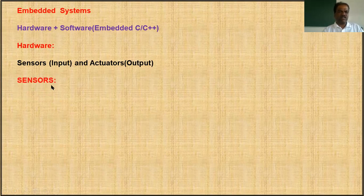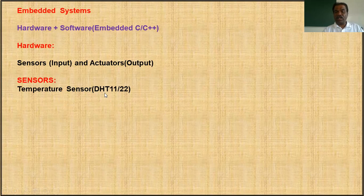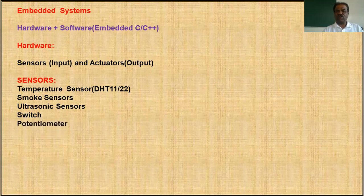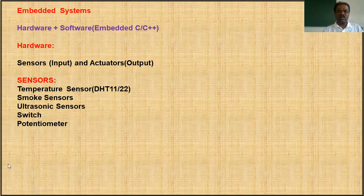We have different types of sensors: temperature sensors, humidity sensors — DHT11 or DHT22 (digital humidity temperature sensor), smoke sensors to detect smoke, ultrasonic sensors to measure distance, switches to check open or closed state, and potentiometers to vary voltage. We can give variable voltage to the microcontroller's ADC — the analog to digital converter — which is part of the microcontroller and converts analog signals to digital.